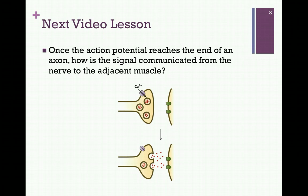In our final video lesson on Chapter 9, we want to see what happens when that action potential reaches the end of an axon — how is the signal communicated from the nerve cell to the adjacent muscle?